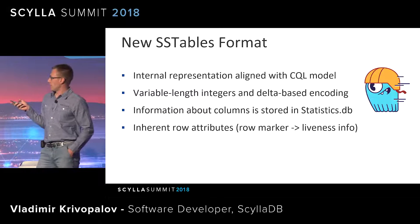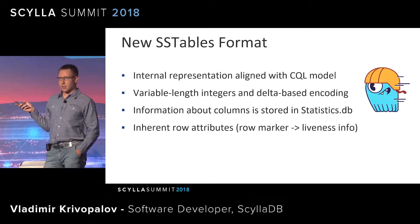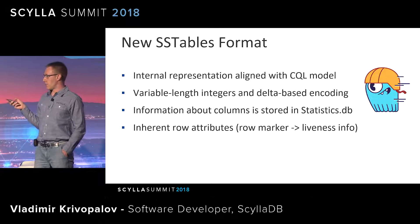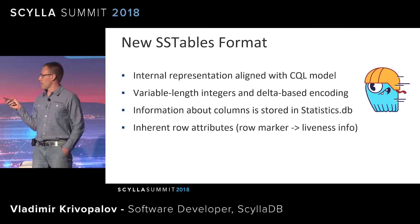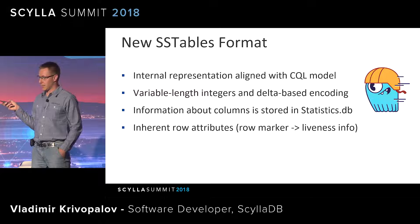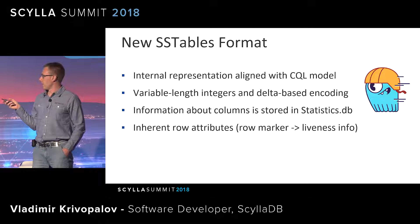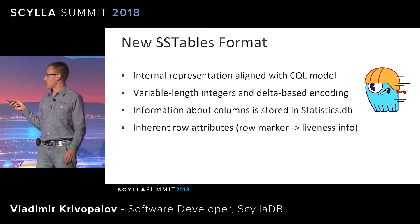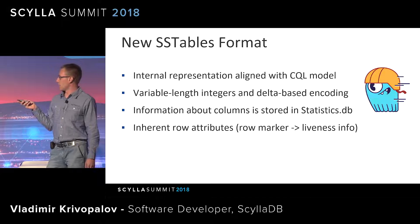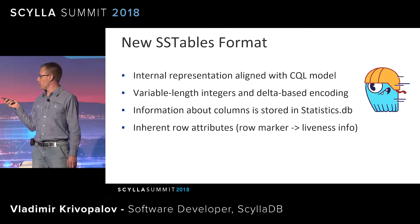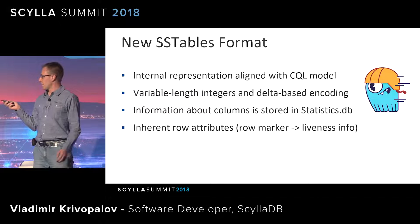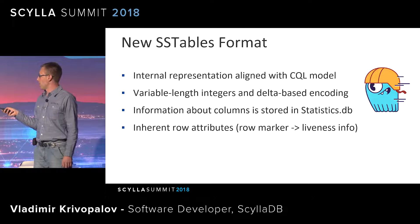Column information is now stored in the statistics DB file. This allows you to output data from an SSTable file without having the schema defined, since all necessary information is stored in the SSTables themselves. This differs from the old format, where you had to declare the schema to read the data file properly. Last but not least, inherent row attributes are now introduced — special structures within each row let you reason about whether the row is alive, expiring, or not — as a full-fledged specialized structure rather than a special cell hack.